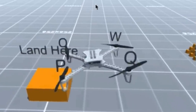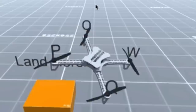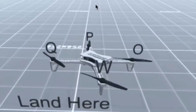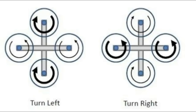Now, using this phenomenon, we can yaw our quad. If we increase the speed of the clockwise rotating motors, then our quadcopter will automatically rotate anticlockwise, and vice versa.